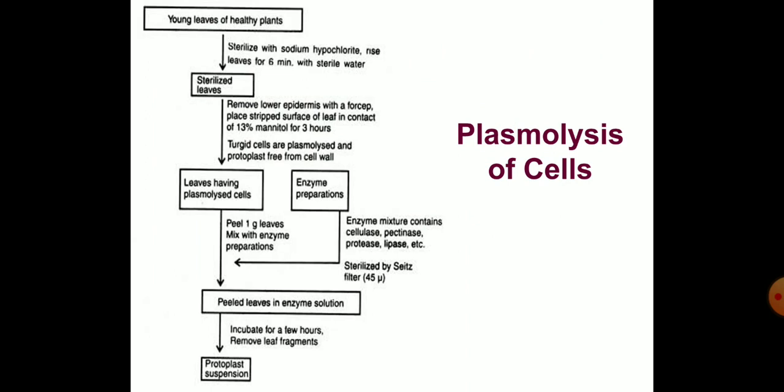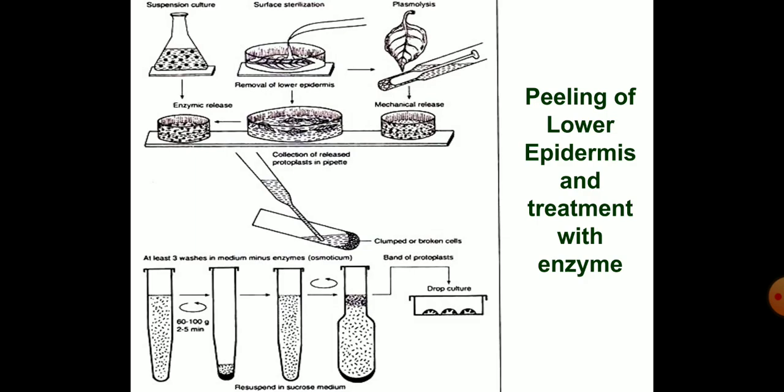Plasmolysis of cells: the lower epidermis covered by cuticle is removed with a forcep. Stripping should be done from midrib to the margin of the lamina. The stripped surface of the leaf is kept in 13% mannitol solution for 3 hours to allow plasmolysis of cells. Then, 1 gram of leaves are peeled off and transferred into the enzyme mixture, facilitating penetration of enzyme into the tissue within 12 to 18 hours at 25 degrees centigrade.